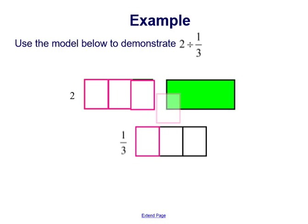Three, four, five, six. So 2 divided by one third, the quotient is going to be 6.